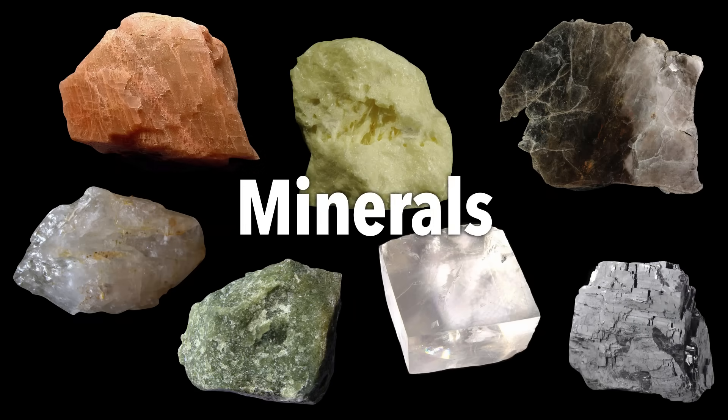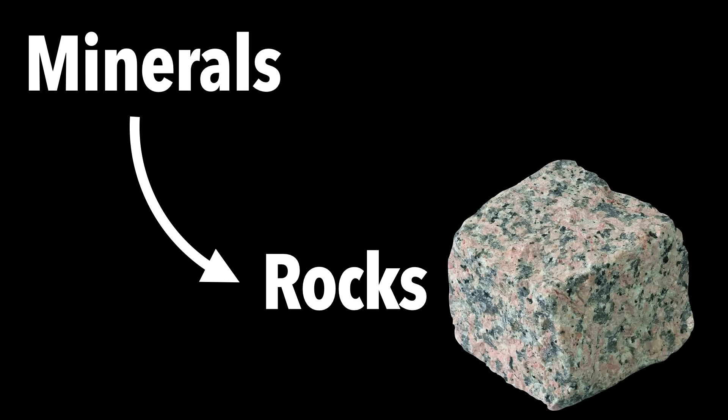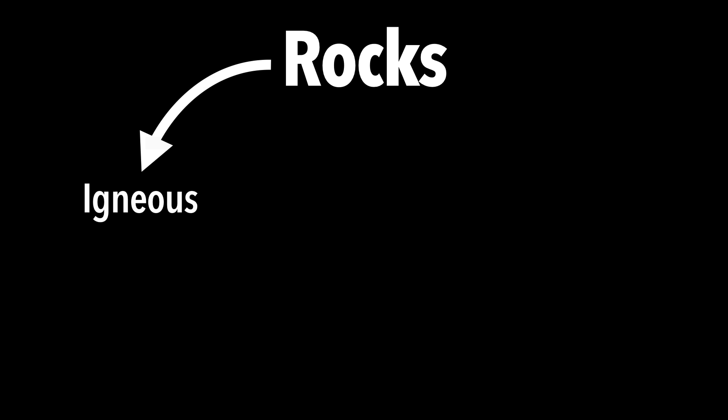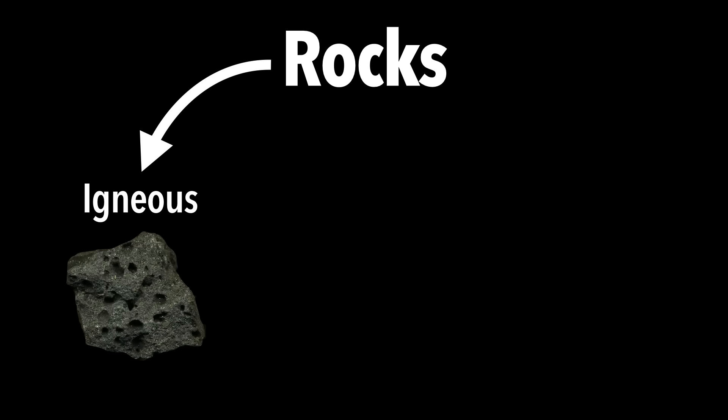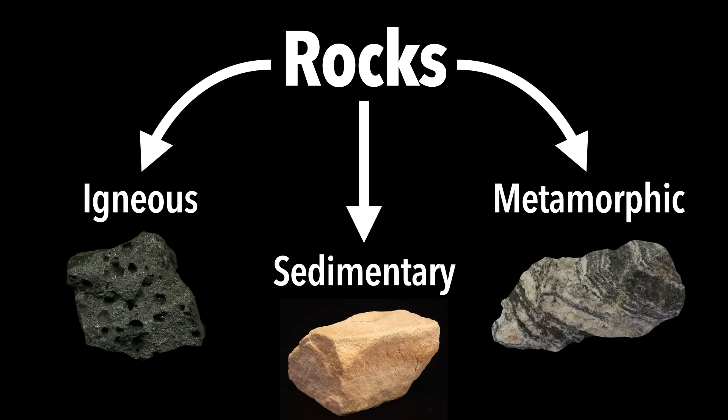So, those are minerals. What happens when minerals combine in nature? We get rocks. Minerals are the building blocks of rocks. There are thousands of types of rocks on Earth, so we need to classify them. We've come up with a classification system in which rocks fall into one of three types, based on the way they form. The three groups are: igneous rocks from magma or lava, sedimentary rocks from compacted sediments, and metamorphic rocks exposed to intense heat and pressure.